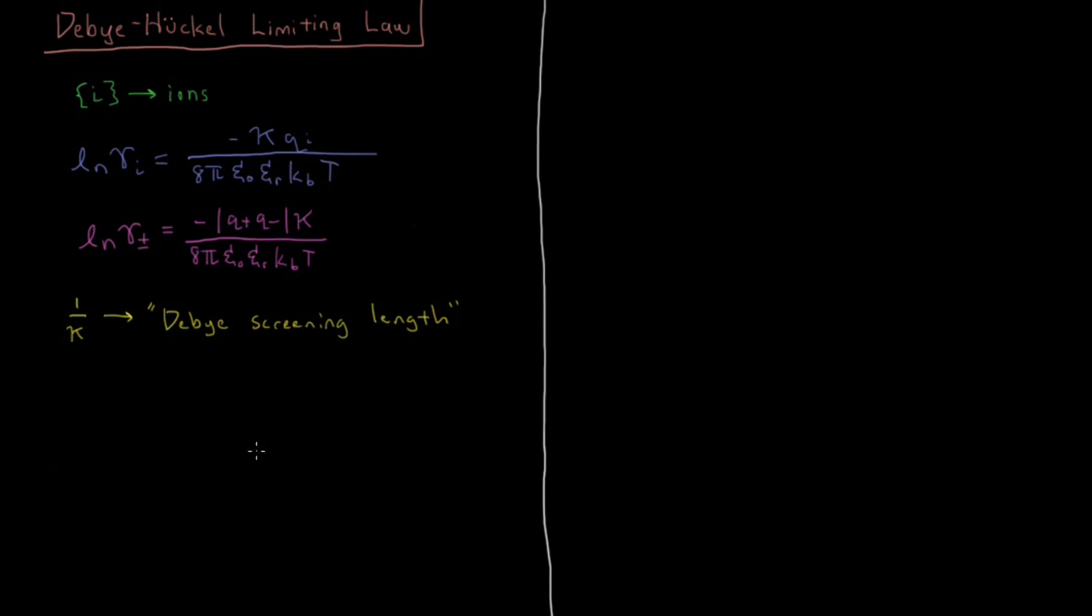I'm going to define another quantity called the ionic strength. Ionic strength is going to be one-half times the sum over all of the individual ions in solution of the square of the integer charge of all of those ions—in units of the charge of the electron, what is the charge on the ion—times the concentration of that ion in its molarity. This C is molarity that I'm indicating.